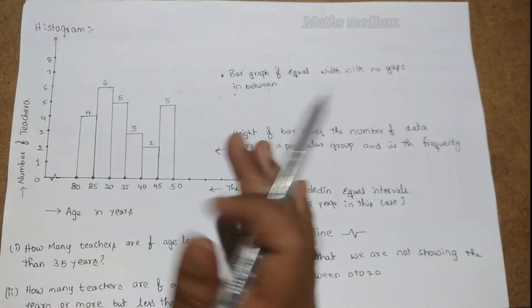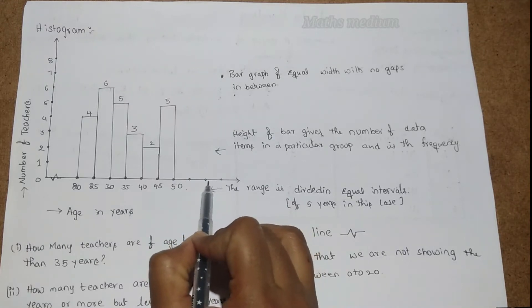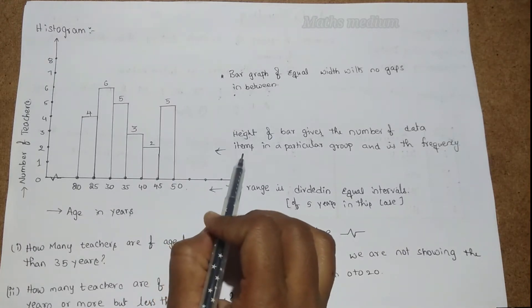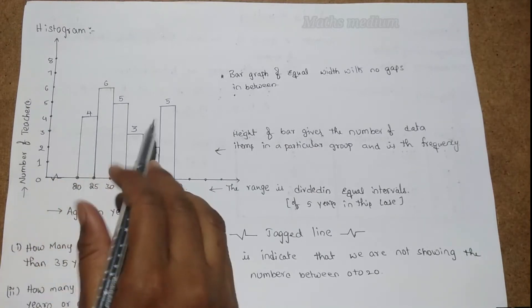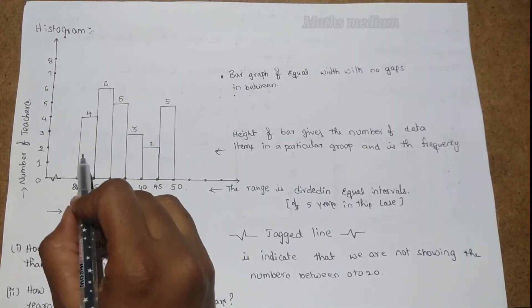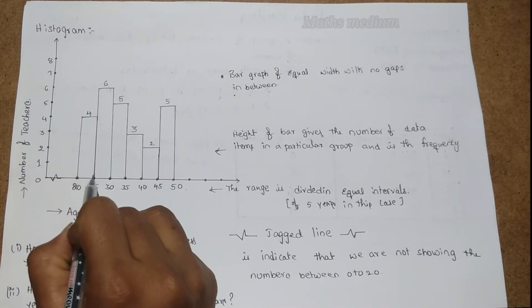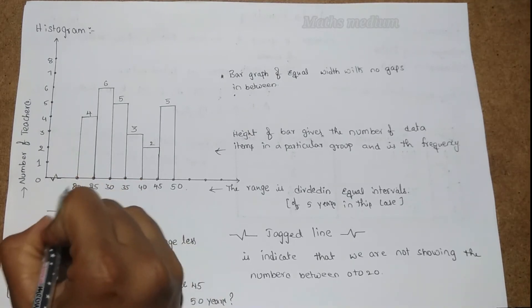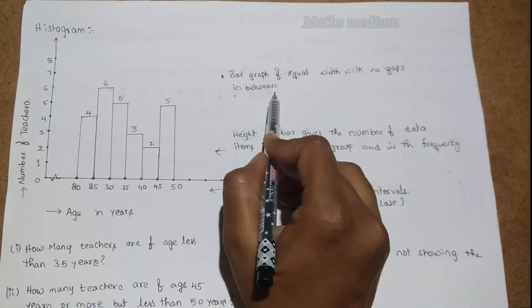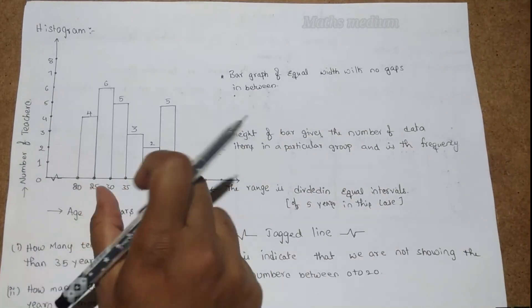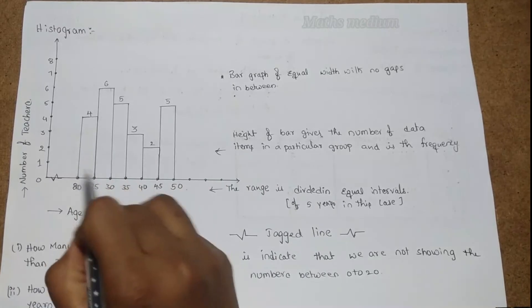If you compare the histogram to a bar graph or double bar graph: in a bar graph there are bars with gaps between them; a double bar graph compares two sets of data. But in a histogram there are no gaps between the bars. The bars are adjoining — each bar touches the next. So a histogram is a bar graph of equal width with no gaps in between.